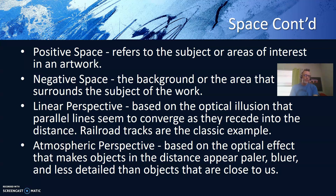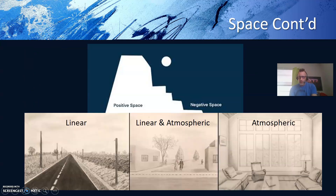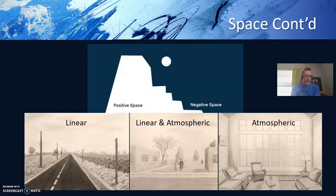Atmospheric perspective is based on the optical effect that makes objects in the distance appear paler, bluer, and less detailed than objects that are close to us. Here are some examples of that. On the left we have linear space. On the right we have atmospheric space, where things in the back are paler and less detailed. And at the top we have the most basic discussion about space between positive and negative.